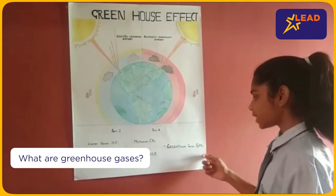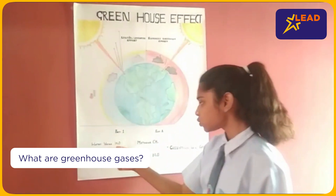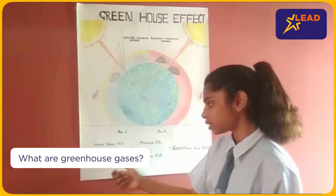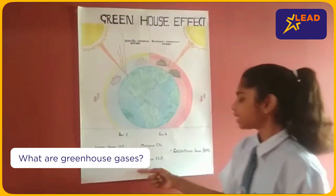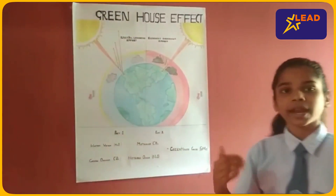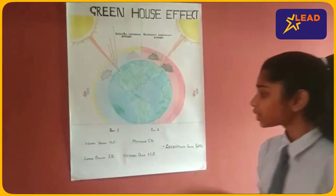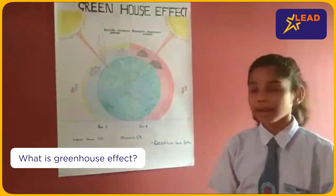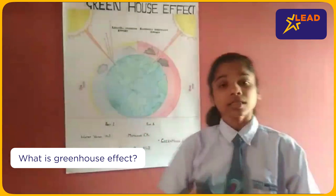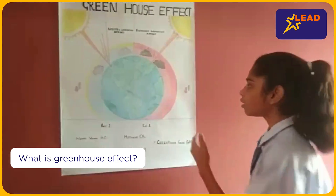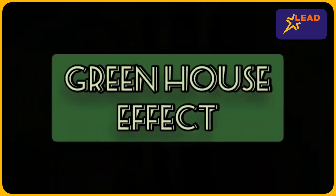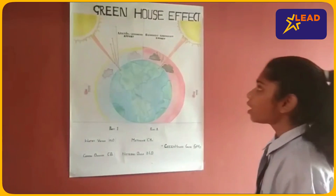Greenhouse gases, namely water vapor (H₂O), methane (CH₄), carbon dioxide (CO₂), nitrous oxide (N₂O), are present in the atmosphere. These gases are responsible for trapping the sun's rays, thus keeping the earth warm. This is called the greenhouse effect.